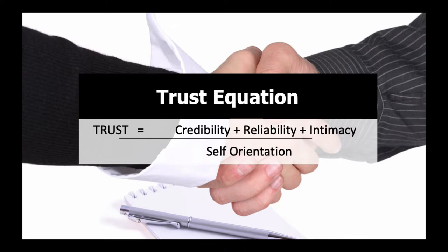If we scored credibility, reliability, and intimacy at 10 out of 10 each, we'd have 30 on the top line. Divided by a low self-orientation — say 1 — we'd get a trust score of 30. But if our self-orientation is high — say 10 — then even with perfect top-line scores, our trust score would only be 3. So self-orientation is absolutely critical. When doing our marketing, we need to do credibility, reliability, and intimacy really well, but also show we're adding value and in this for the long haul.